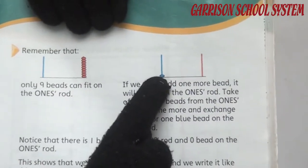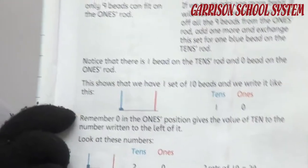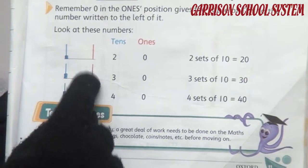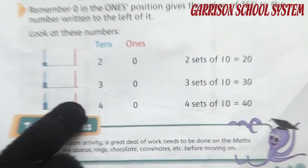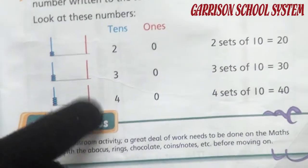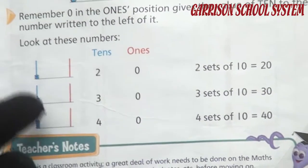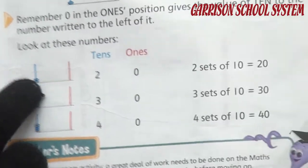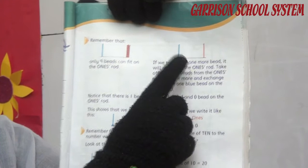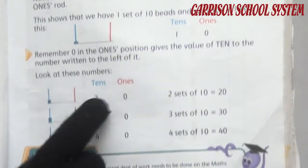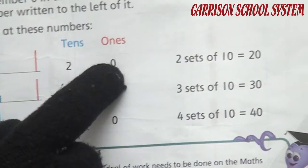Here is one bead on tens and nothing on orange — meaning zero. So one-zero, ten. It shows it is ten. One bead on tens means ten. Same like that, here is another example. The orange line is skipped, there is nothing on it, so here is a value of zero. And look at the blue rod — here are two beads. When we put one rod it means ten, so two rods mean twenty. Two, zero, twenty. In tens we write two and in ones we write zero, because there is nothing there.